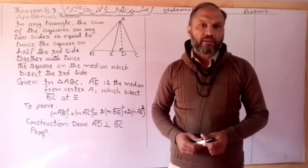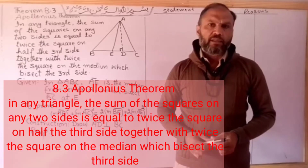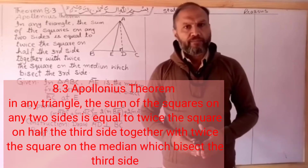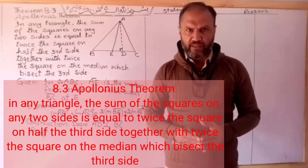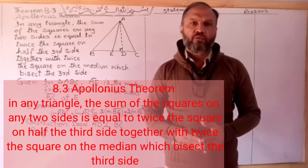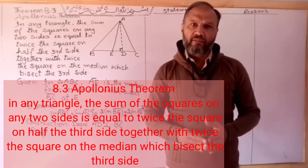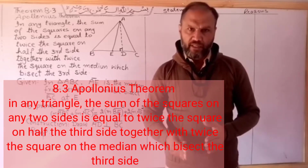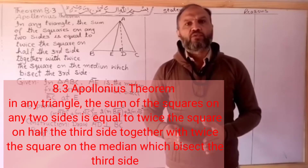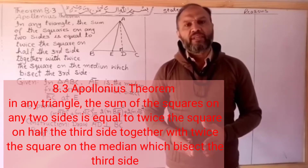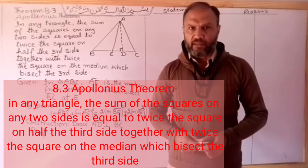Apollonius Theorem's statement is thus: In any triangle, the sum of the squares on any two sides is equal to twice the square on half the third side, together with twice the square on the median which bisects the third side.